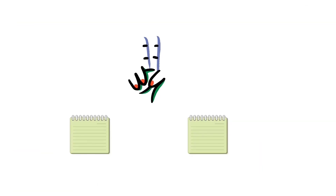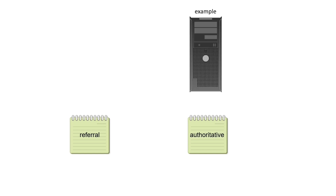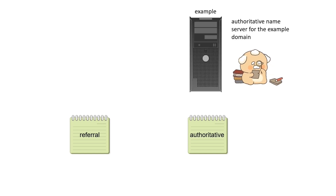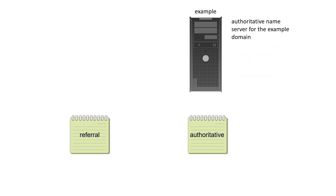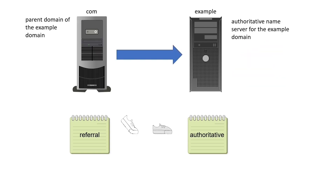There are two types of Name Server records: Authoritative and Referral. An authoritative Name Server record authorizes a Name Server to resolve queries. A Referral Name Server record diverts queries to the authoritative Name Server.